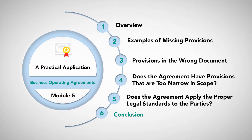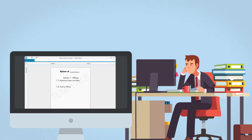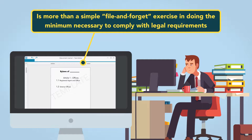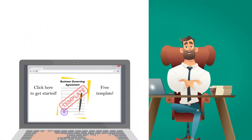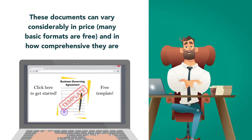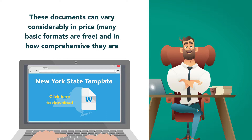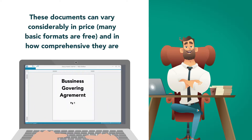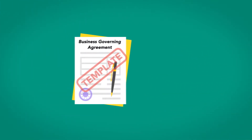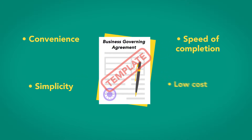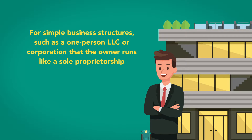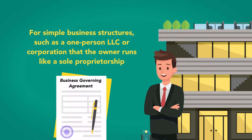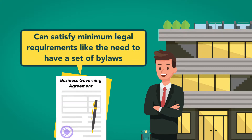Conclusion. A carefully considered and properly prepared business governing agreement is more than a simple file-and-forget exercise in doing the minimum necessary to comply with the legal requirements. For entrepreneurs who are willing to go with a hands-on approach to creating a governing agreement, many internet-based services exist to provide templates. These documents can vary considerably in price—many basic formats are free—and in how comprehensive they are. Some are state-specific, while others are generic. Some are well-written, and others are riddled with spelling errors and mistakes in grammar. The advantages of these boilerplate templates are convenience, speed of completion, simplicity, and low cost compared to creating a governing agreement with the assistance of an attorney. For simple business structures, such as a one-person LLC or a corporation that the owner runs like a sole proprietorship, a no-frills governing agreement can satisfy minimum legal requirements like the need to have a set of bylaws.